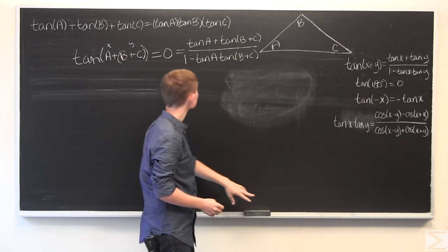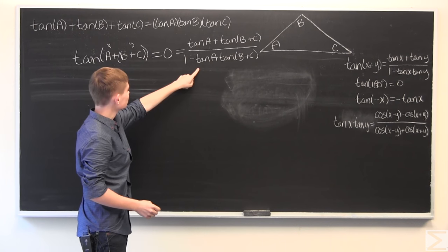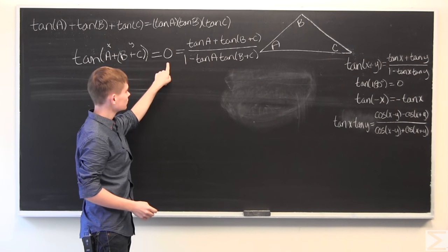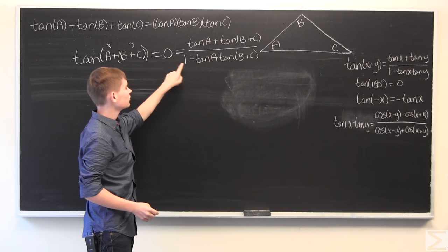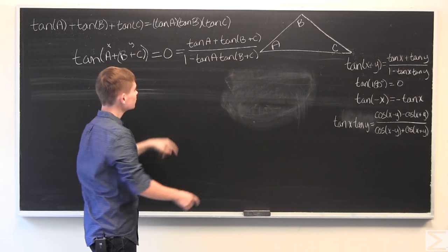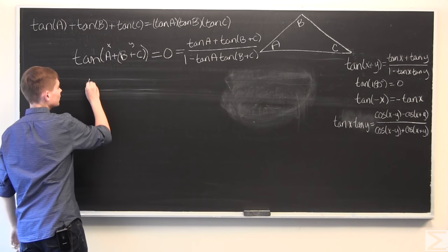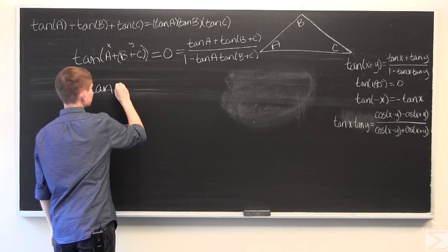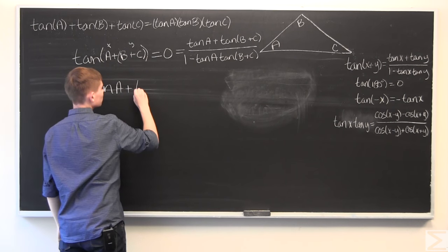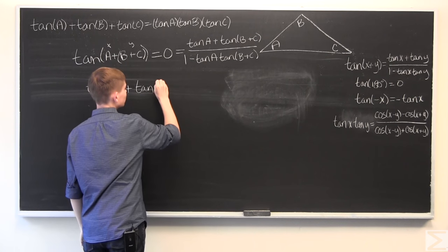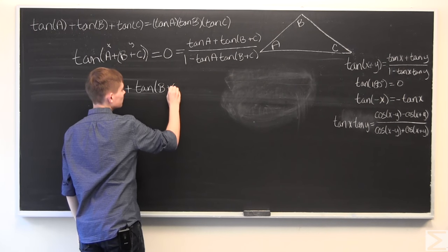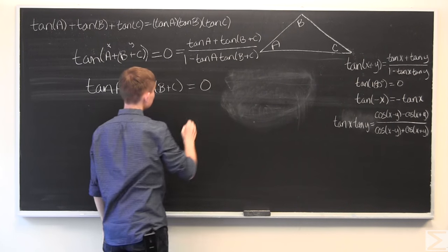And so, what we can do is multiply zero by the denominator to simplify this. And, we get that the tangent of A plus the tangent of B plus C is equal to zero.